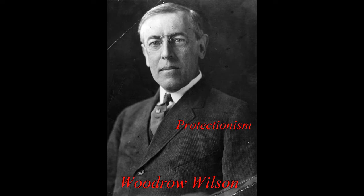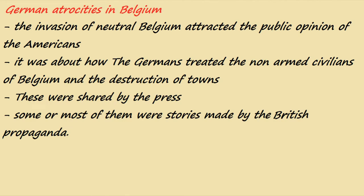Now we move to the first reason: German atrocities in Belgium. When we talk about atrocities, it means the cruel acts that the Germans did in Belgium. As explained in previous videos, Germany invaded Belgium in order to flank France. Belgium at that time was a neutral country according to the Treaty of London in 1839. The invasion of neutral Belgium attracted the public opinion of the Americans.